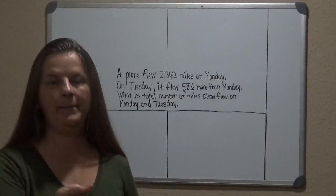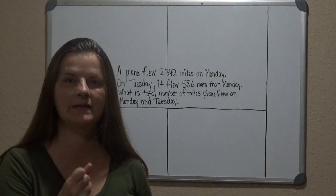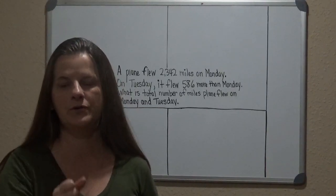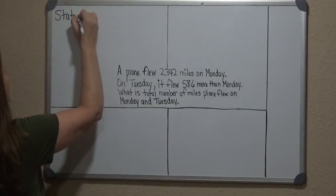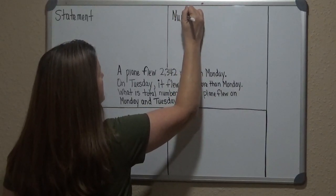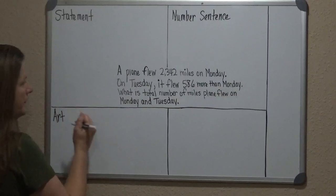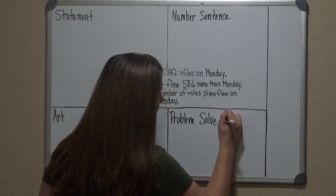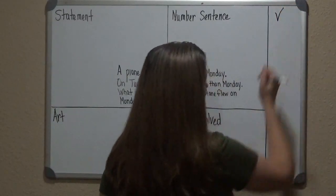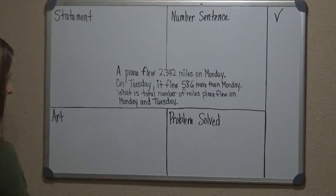This acronym is called the SNAP and CHECK. It's really simple for kids because you're doing the snapping and it helps them remember what they need to do. The S stands for Statement, the N stands for Number sentence, the A stands for Art, the P stands for Problem solve — this is where you solve the problem. And then the CHECK is where you use the inverse property of addition, subtraction, multiplication, or division to check that you did the problem solving correctly.